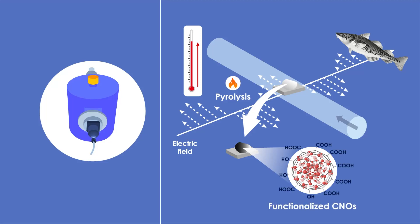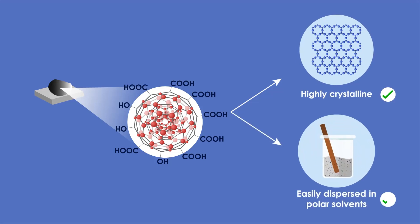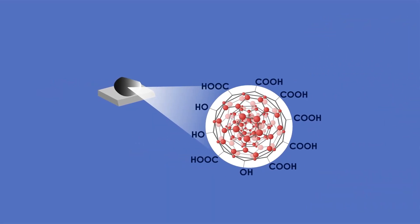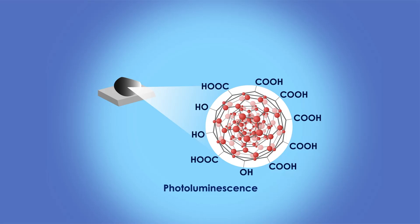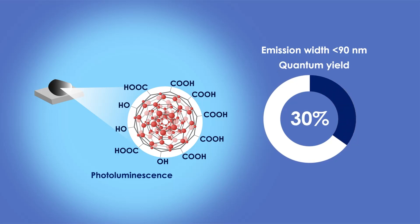The nano-onions produced were highly crystalline and easily dispersed in polar solvents, which is a rare virtue in CNOs prepared from biomass waste. They also exhibited ultra-bright visible photoluminescence with an emission width of less than 90 nanometers and a quantum yield of 40%, which is 10 times higher when compared to previously reported CNOs prepared using conventional methods.